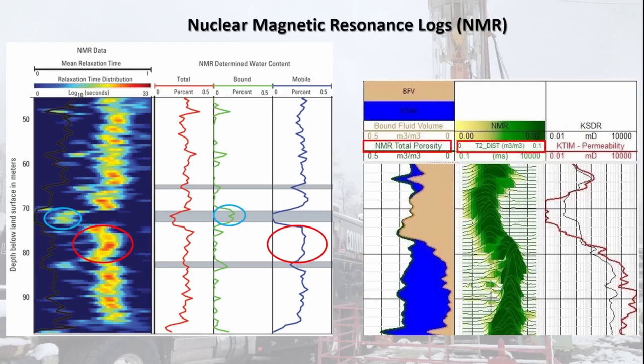Further analysis can use the ratios of different sized pores to estimate permeability. High number of large pores suggest high permeability. These measurements from NMR tools can further be used to make inferences about formation size, shape, composition, and fluid characteristics.